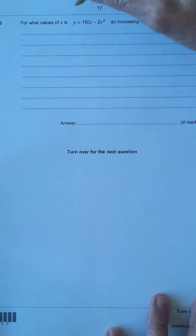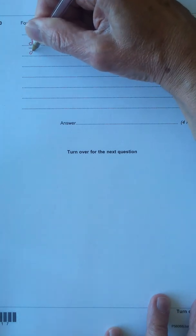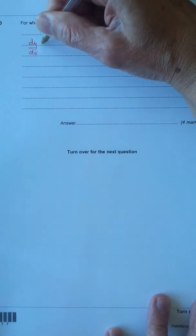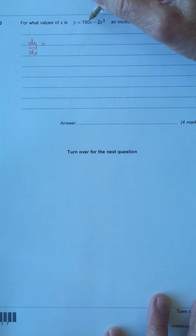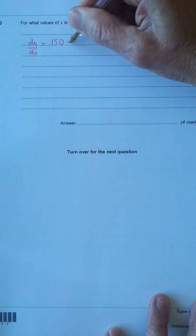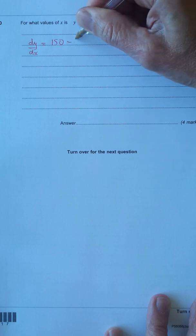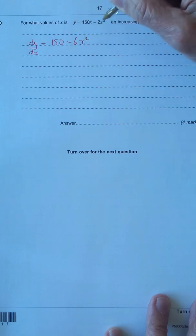First we'll differentiate this, quite easy to differentiate. dy/dx equals 150x just goes to 150, and then minus, multiply by the power and reduce the power by 1, so 3 times 2 is 6x, and that goes down to 2.